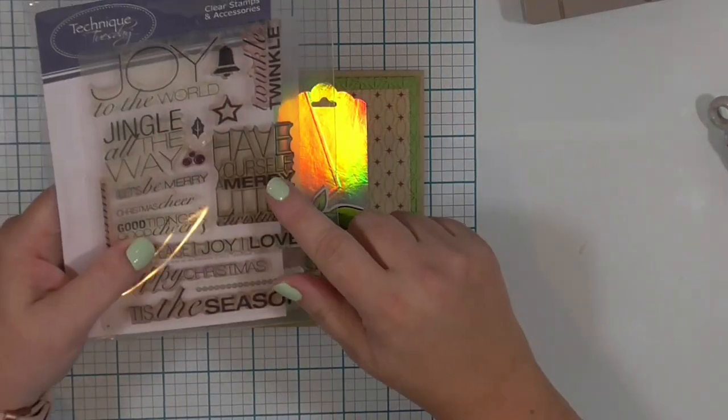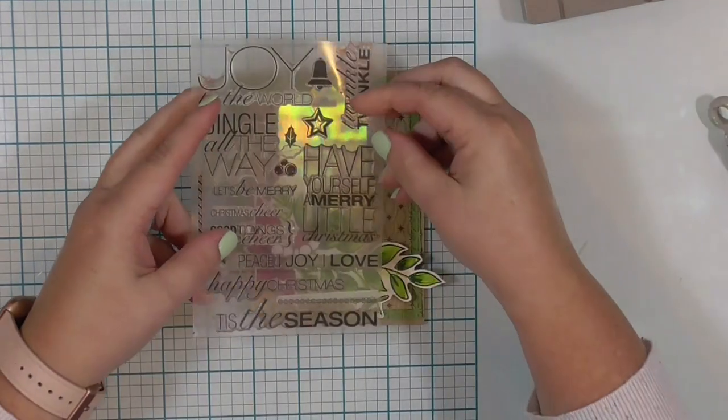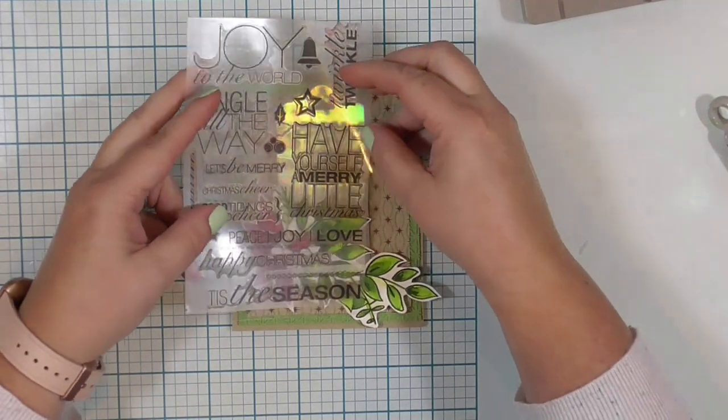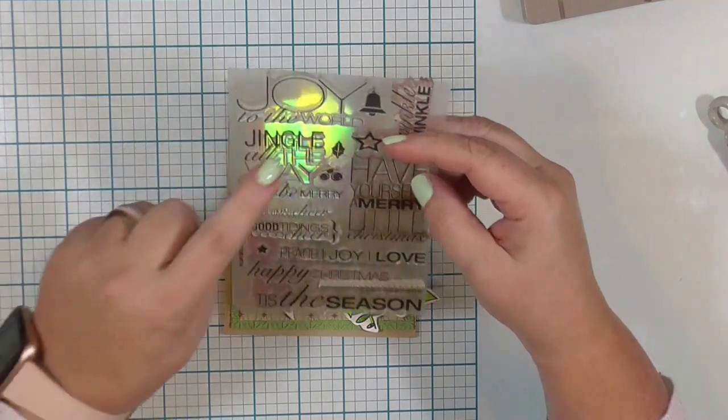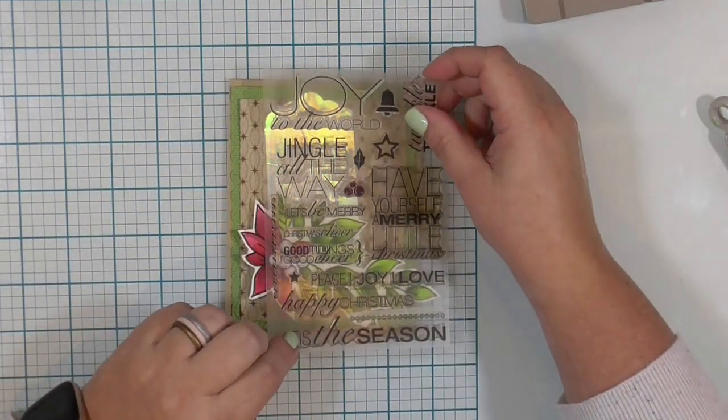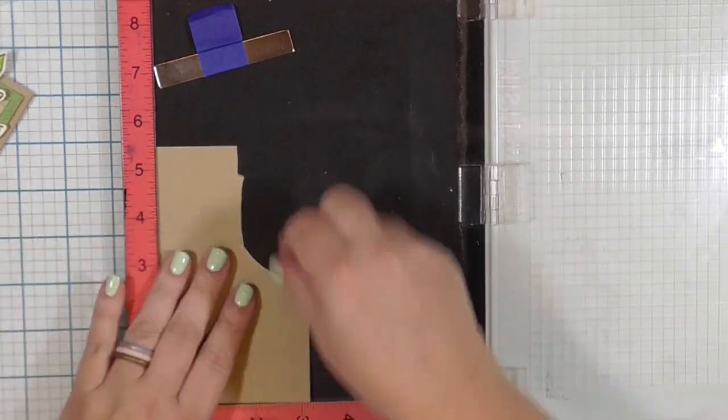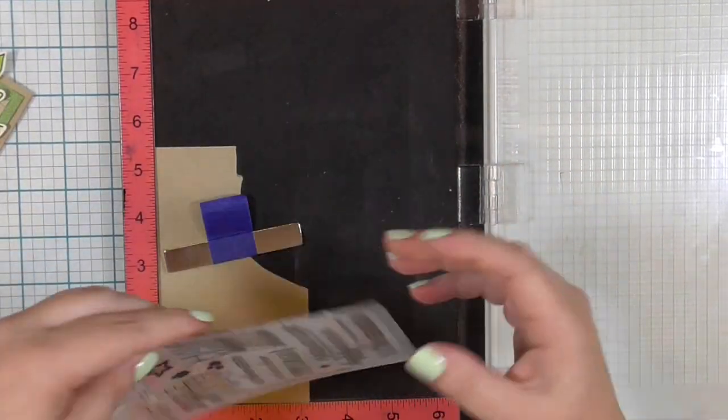I think this is how I want to do it. Originally I chose this Have a Merry Christmas sentiment, but it's too tall. I can't stamp that and still have it readable with the swag of the flowers. So instead I'm going to use that one that says Jingle All the Way. Same stamp set, it's a little bit shorter, and it will fit perfectly.